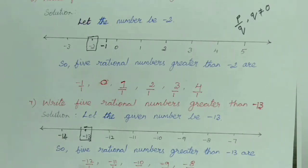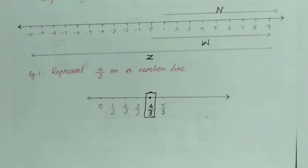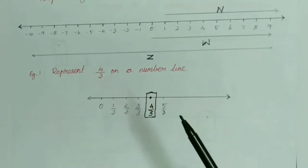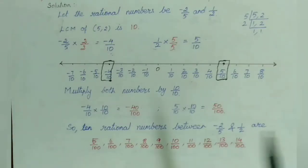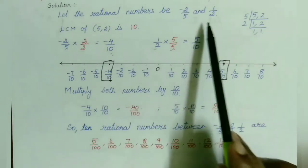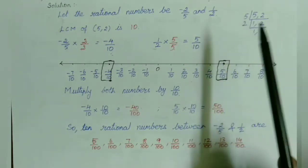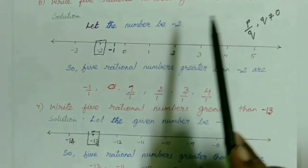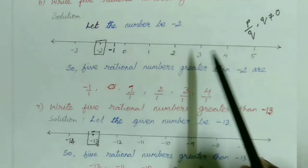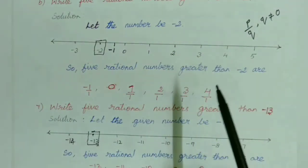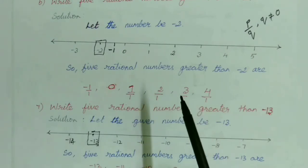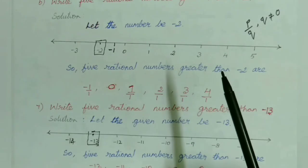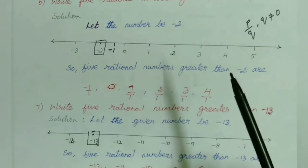So in this video we have seen how to represent rational numbers on a number line, how to find rational numbers in between two given numbers, and how to find numbers greater than a given number. That's all for this video. If you like this video, hit the like button and subscribe too. Thank you!